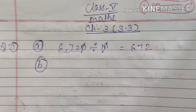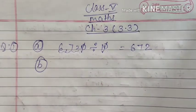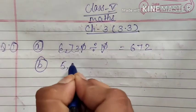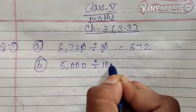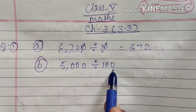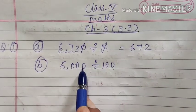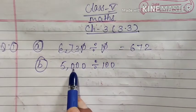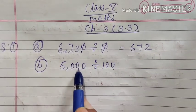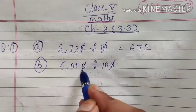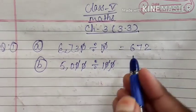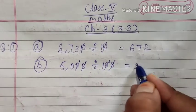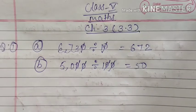For the second one: 5000 divided by 100. In 100 we have two zeros, and here we have minimum two zeros needed. Here we have three zeros, so one zero cancels one zero and another zero cancels another zero. Now 50 divided by one is equal to 50. Like this we can write direct answers in question number 1.